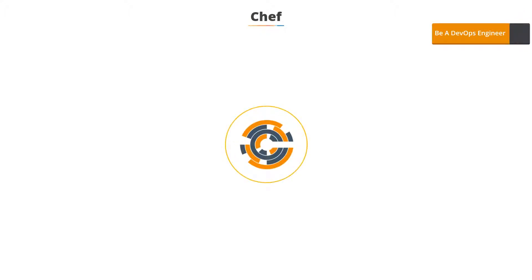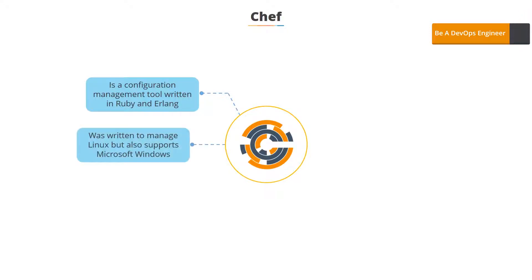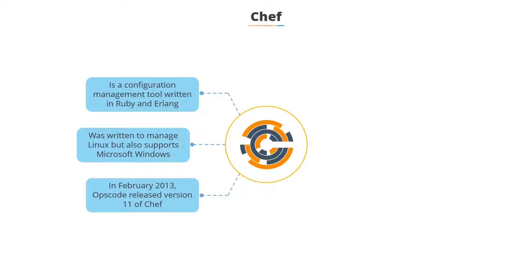Let's take a look at another configuration management tool called Chef. Chef was originally written in Ruby and Erlang, and was essentially written to manage Linux, but as of now also supports Microsoft Windows. In February 2013, Opscode released version 11 of Chef, which uses pure Ruby to write system configurations, also referred to as recipes.